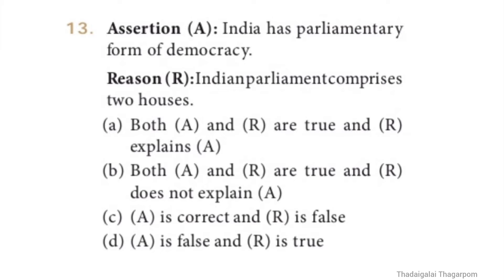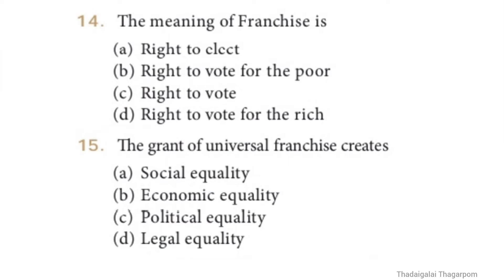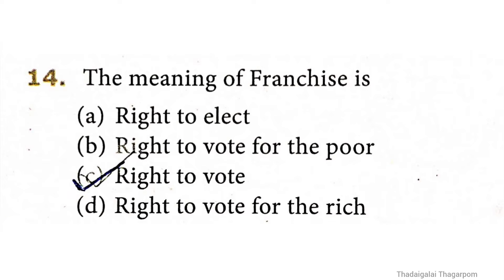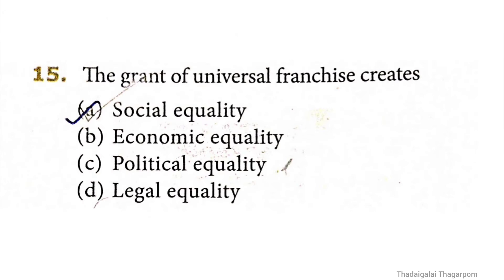Thirteenth question: assertion - India has a parliamentary form of democracy; reason - Indian Parliament comprises two houses. The answer is option A: both assertion and reason are true and the reason explains the assertion. Fourteenth question: the meaning of franchise is what? The answer is option C: right to vote.